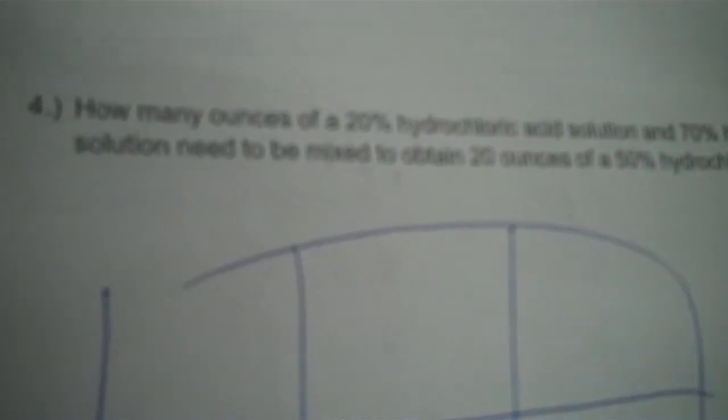Next problem. How many ounces of a 20% hydrochloric acid solution and a 70% hydrochloric acid solution need to be mixed to obtain 20 ounces of a 50% hydrochloric acid solution? So, this is a percent. We're mixing a low concentration with a higher concentration. We end up with a concentration that's in between.